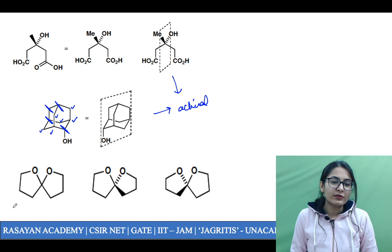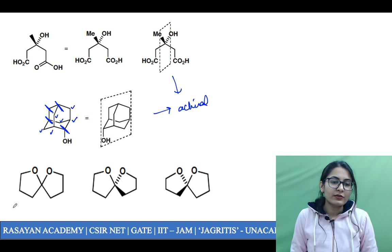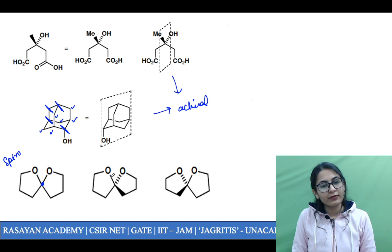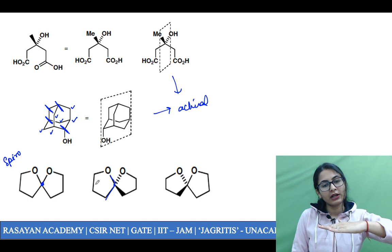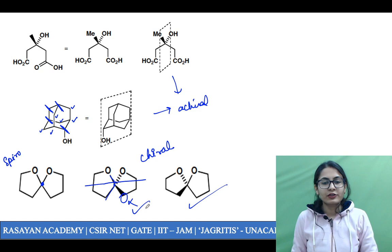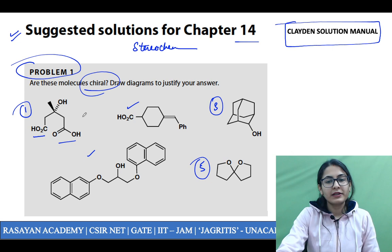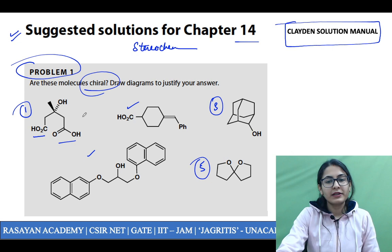The last one is your spiro molecule. If this one carbon has four different groups they have to be tetrahedral, so imagine one ring is on the plane of paper and the other is perpendicular to it — the two rings are perpendicular to each other. There cannot be any sigma plane because if you want to cut the molecule in half, there would need to be an oxygen on the other side as well, which is not there. Definitely this is chiral, and there are two different enantiomers of the chiral form. The answer is the second molecule — this is your answer to the TIFR 2018 question.